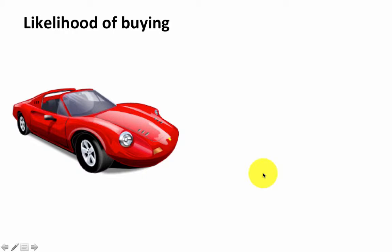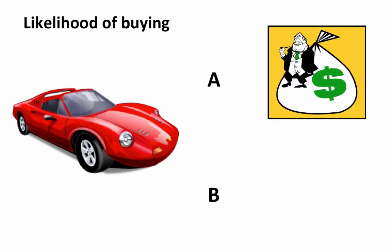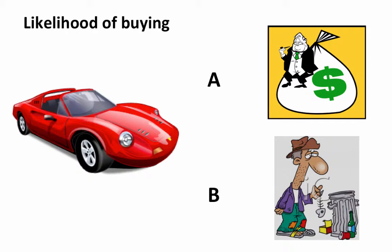Let's consider a motivating example. Let's say we're thinking about two people, A and B, and the likelihood of them buying a luxury or a sports car. Now without any further information, we really cannot say much about the likelihood of their buying a luxury car or who is more likely to buy one. On the other hand, suppose I add some additional attribute information like the amount of money each person has — one is loaded with money and the second is just a tramp. Then obviously we can say that the likelihood that A is going to buy a luxury or sports car is higher than that of B.